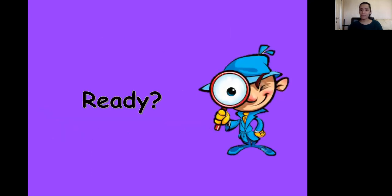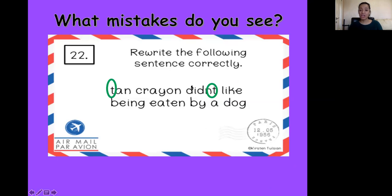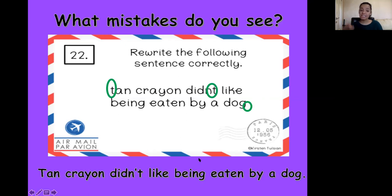Now we can become detectives. Are you ready? What mistakes do you see in this sentence? Tan crayon didn't like being eaten by a dog. The beginning of a sentence needs a capital letter. With the word didn't, it needs an apostrophe. And the very end of the sentence needs a full stop. So we rewrite: Tan, with a capital T, crayon didn't like being eaten by a dog, full stop. And the didn't has the apostrophe. Well done.